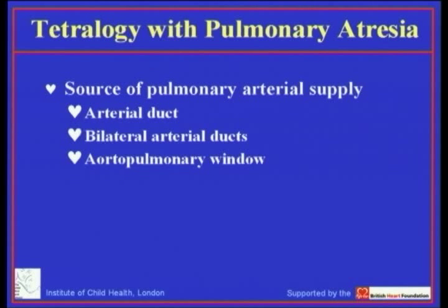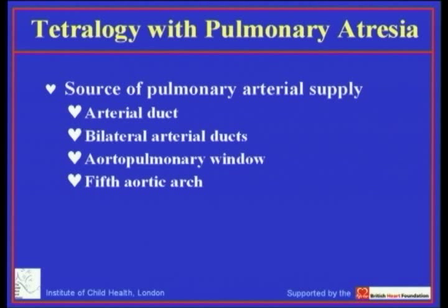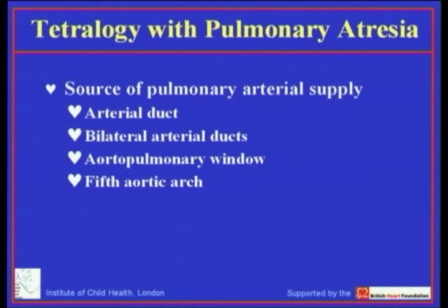In a very small subset, pulmonary arterial supply comes through an aorto-pulmonary window. The literature also describes cases where the pulmonary arteries come through a fifth aortic arch — and the speaker has co-authored articles describing this in tetralogy with pulmonary atresia. However, having spent five years studying normal cardiac development and never finding a fifth aortic arch, the speaker now finds it difficult to believe this entity can exist in tetralogy when it does not exist normally, and no longer believes in the existence of the fifth aortic arch despite previous publications.